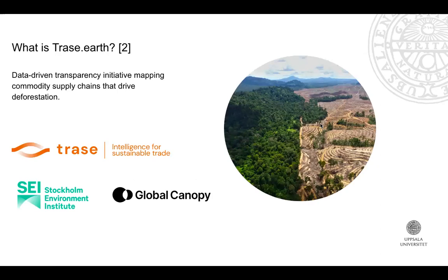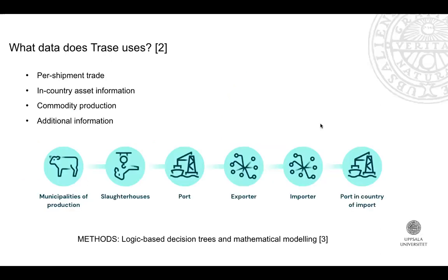First, what is Trace.Earth? It is a data-driven transparency initiative that maps commodity supply chains that drive deforestation. It's a joint initiative between Stockholm Environment Institute and Global Canopy. It ingests a wide range of data — trading data, geospatial data, commodity production data. Depending on the commodity, for example beef production, it requires additional information, different for soy, wood pulp, or other commodities.